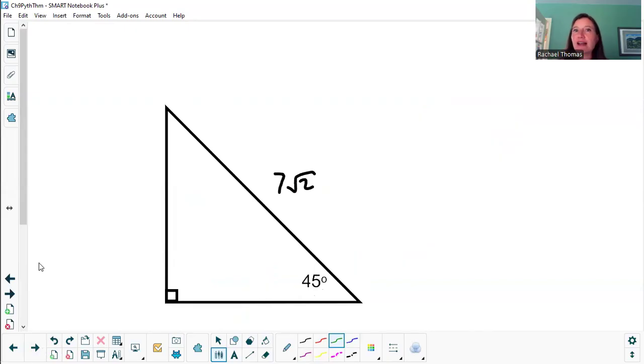Sometimes we're given the side that has a square root on it. And then again, we're just kind of extrapolating or reverse engineering. If I already had x root 2, what was x? So if x root 2 is 7 root 2, x is 7, and these legs are just 7.